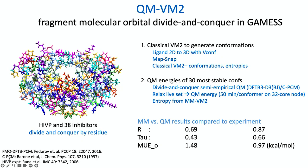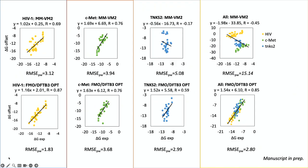Looking at results: we relax the live set, and these full-protein QM calculations take about 50 minutes per conformer on a 32-core node, with entropy taken from MM VM2. We do see an improvement in metrics — probably about as good as you can get. The data tightens up visibly on the plot. For CMET, it tightens up somewhat, but there's an outlier and we don't see an improvement in correlation. It doesn't get any worse either.